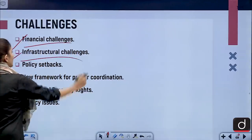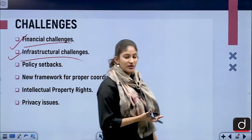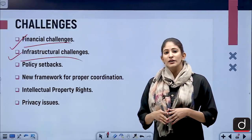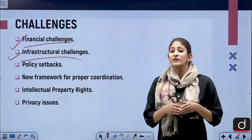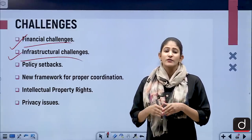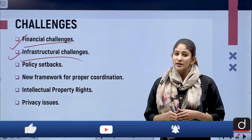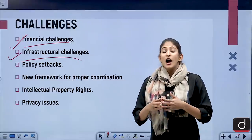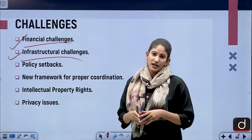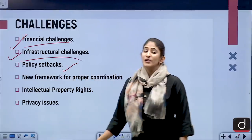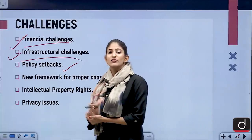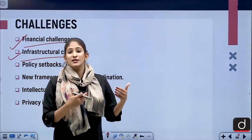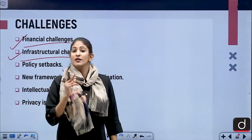Then come infrastructural challenges. How will the government provide such a huge digital infrastructure? Scientific encouragement should not only be given in urban areas but also rural areas, for which digital penetration is required. There are also policy setbacks — the government has not yet made a robust policy to coordinate between different sectors for research and development accessibility.